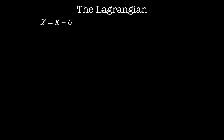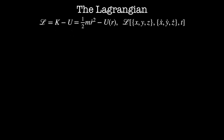In this video, we'll derive a very special functional that physicists use to describe the dynamics of many complex systems. It's called the Lagrangian. The Lagrangian is defined as the kinetic energy minus the potential energy, which gives us one half mv squared minus the potential energy as a function of position. The Lagrangian is then a functional of position, velocity, and time, where position and velocity may themselves be functions of time.